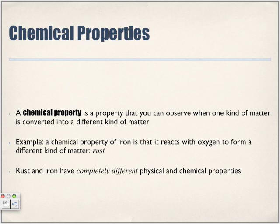It cannot go back — it has completely changed its entire composition. Rust and iron have completely different physical and chemical properties from one another. If you look at them physically, they're completely different, and somehow one reacted to form something else.